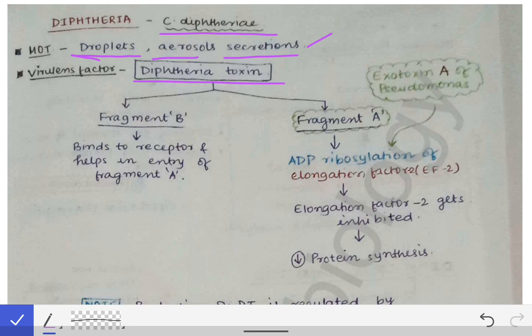Fragment B functions to bind receptors and help in the entry of Fragment A into the cell. This mechanism is similar to what we saw with cholera as well.